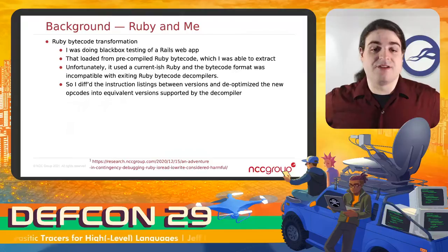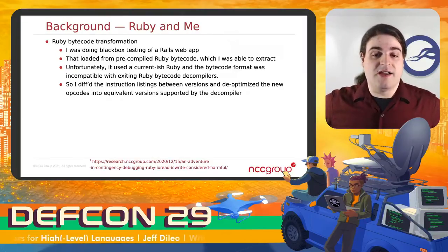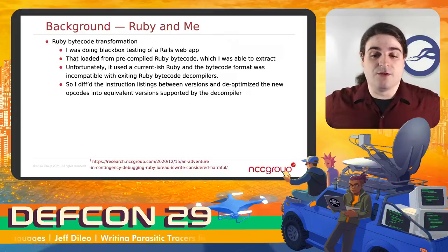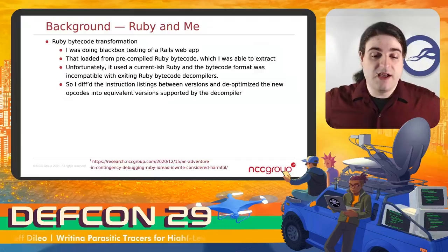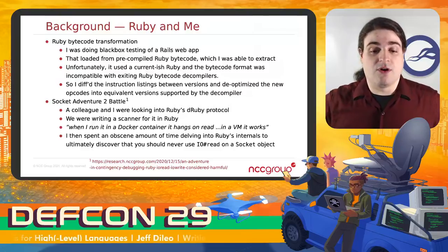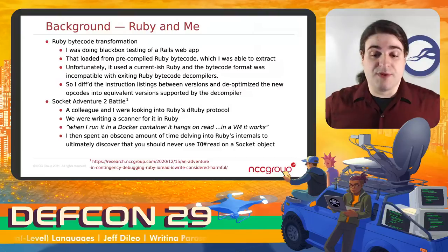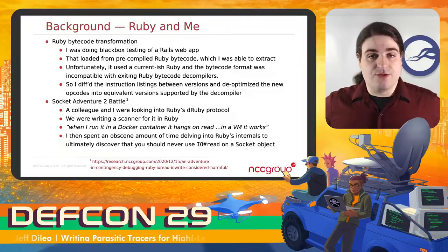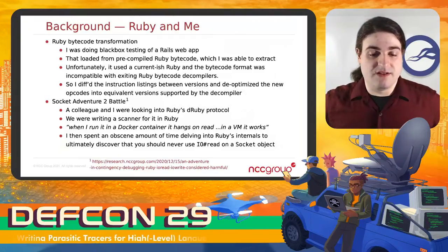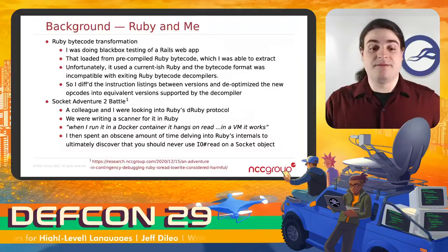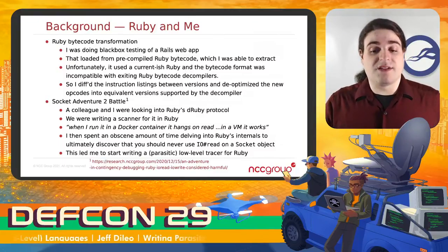I've also been recently doing tracing with Frida for Ruby, which is what this talk is about. A little while back, I had to do some Ruby bytecode transformation stuff — convert more modern bytecode to an older format, translating newer opcodes into equivalent older ones so that a decompiler that only knew the older format would work. More recently, a colleague and I were looking at Ruby's DRuby protocol. We were writing a scanner for it in Ruby, of all things. We gave a talk on this at NorthSec earlier this year. There were some weird issues, and I spent a lot of time debugging through Ruby's internal C source code to find out that basically you don't want to call io.read on a socket object — instead, you want to just call receive. This led me to start writing this parasitic low-level Ruby tracer.